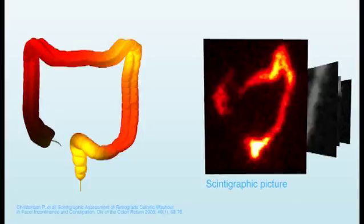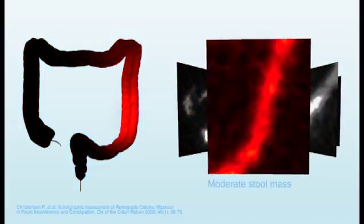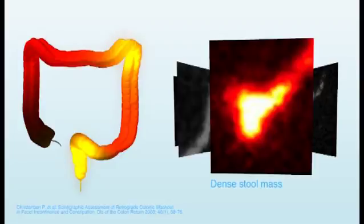The fecal matter has been traced using radioactive markers. You can see that there is a large amount of fecal mass throughout the descending colon and in the rectum, denoted by the bright yellow color.